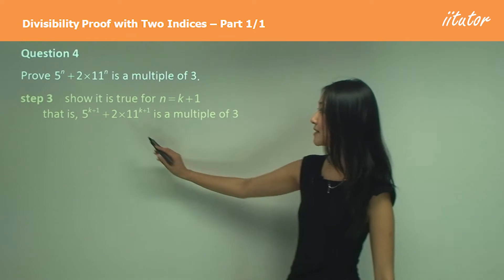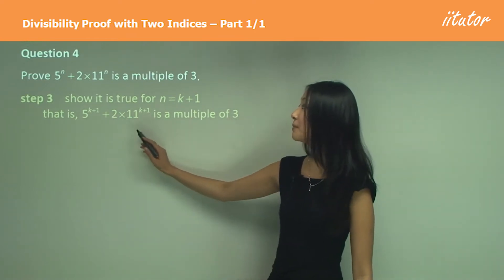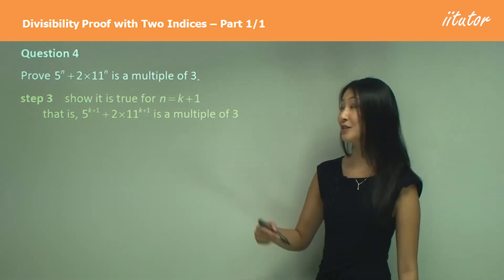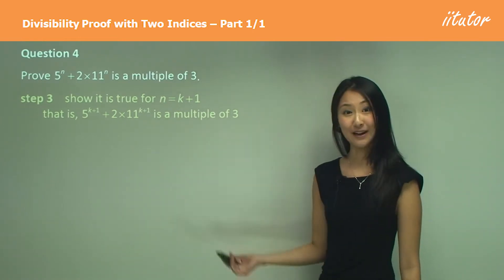Substituting k plus 1 here and here, we want to prove that this is a multiple of 3. That is, we want to be able to factorize out a 3 at the end of it.